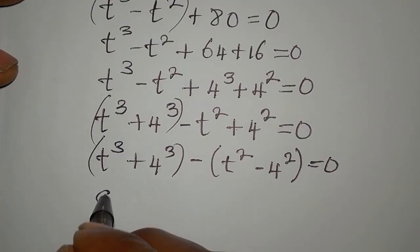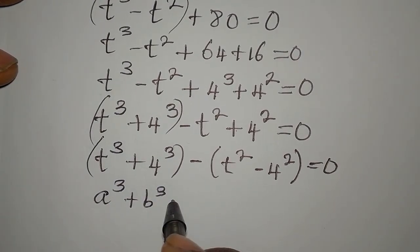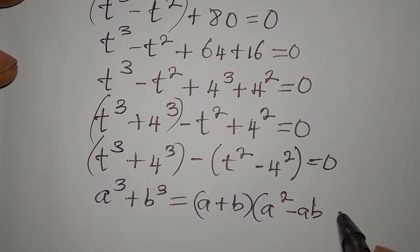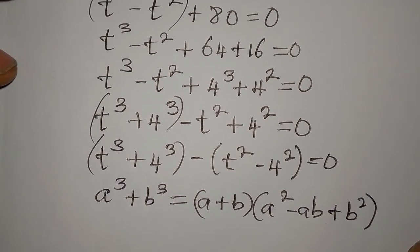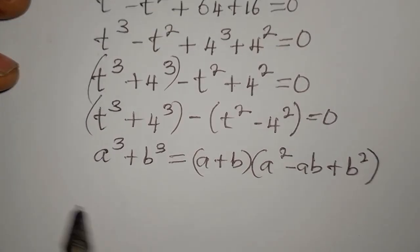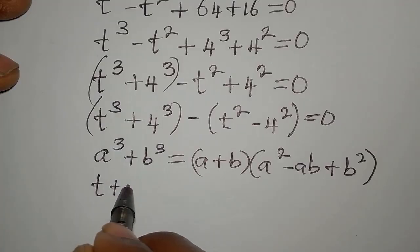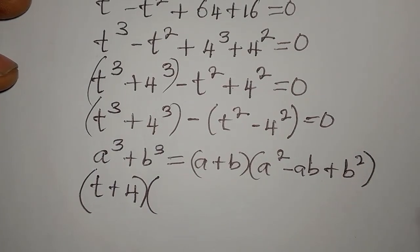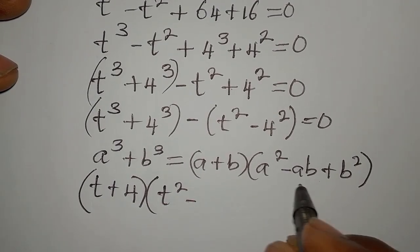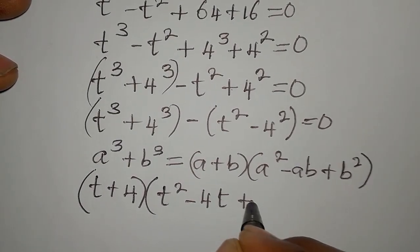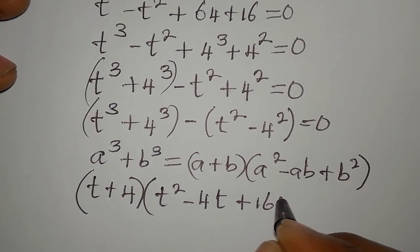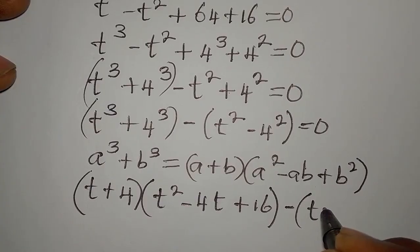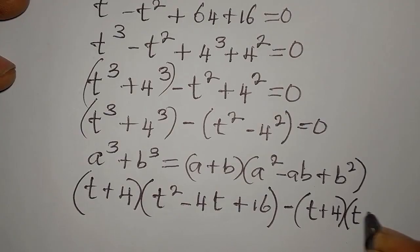The sum of cubes formula is: a cubed plus b cubed equals (a + b)(a squared minus ab plus b squared). Applying this, a plus b gives us t plus 4, multiplied by a squared minus ab plus b squared, which is t squared minus 4t plus 16. Then minus the difference of two squares: (t + 4)(t − 4).